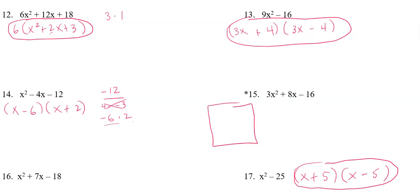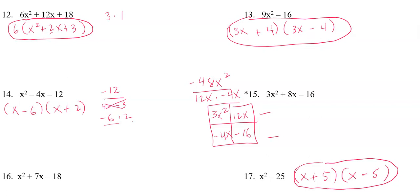Number fifteen is another box method problem. For 3x² + 8x − 16: multiply 3x² and −16 to get −48x². Find factors of −48x² that add to +8x — that's 12x and −4x. Fill in the empty squares and find the four GCFs. Across the top: 3x; other direction: −4. First column: x; second column: 4. Factoring is (3x − 4)(x + 4).